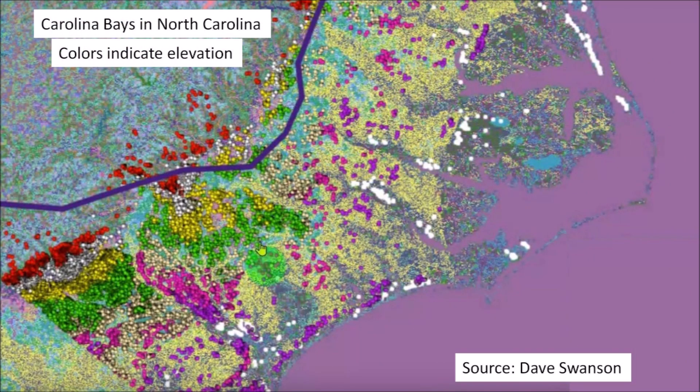Dave Swanson used the survey database to study the characteristics of 14,309 Carolina bays in North Carolina. This image represents the Carolina bays with different colors based on their elevation above sea level. There is a link to Dave's video in the description below.